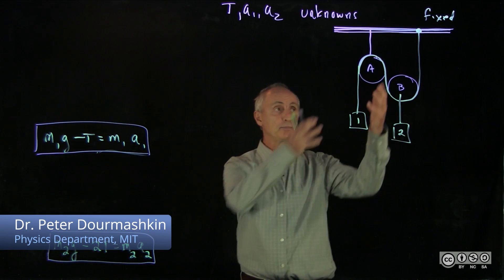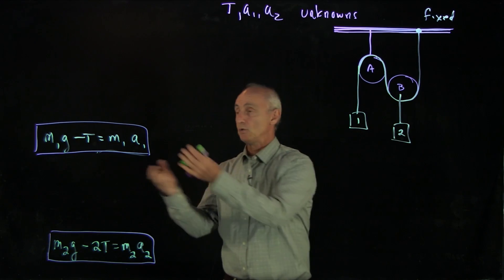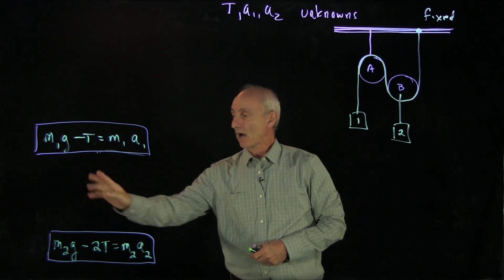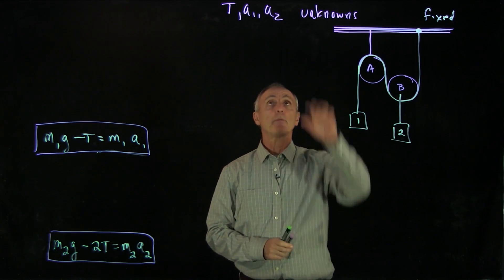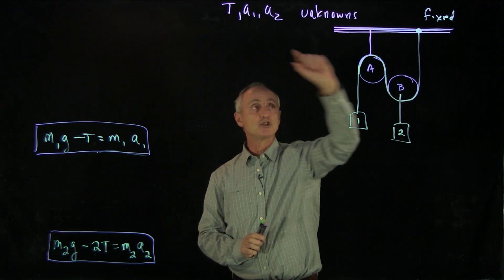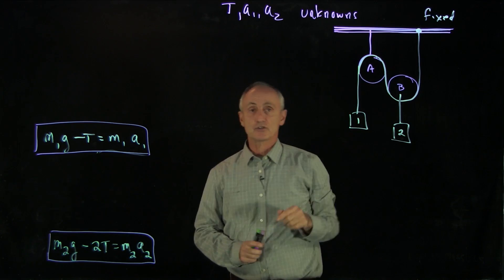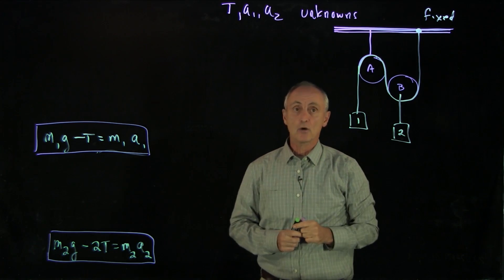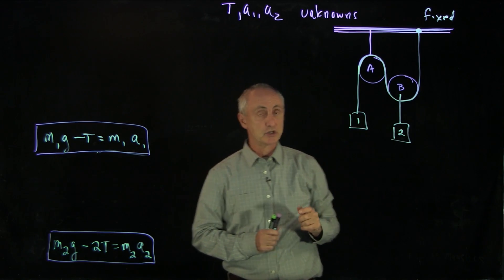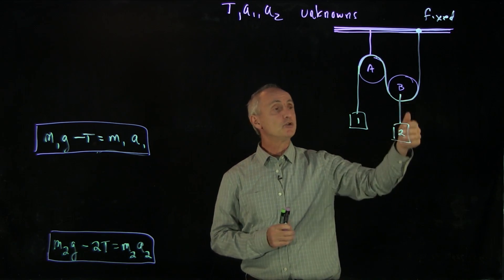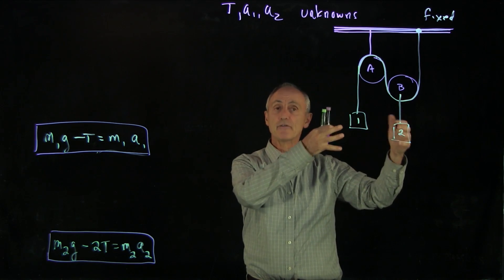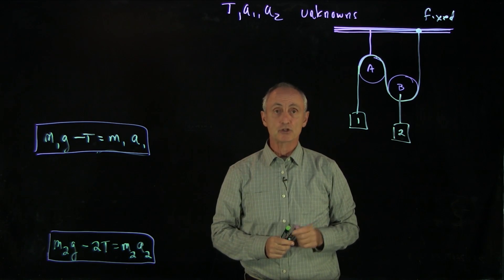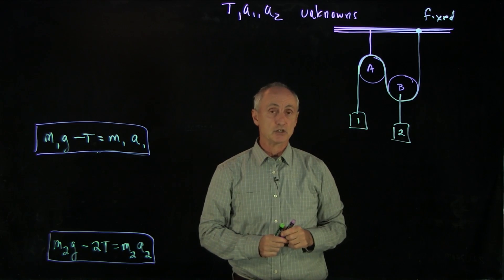When we analyzed Newton's second law applied to this compound system, we had two equations for M1, object 1, and object 2. We found that we had three unknowns: the tension in the string and the accelerations of the two objects. How do we solve this system? We're missing one condition, a constraint condition, which is that as object 2 moves and object 1 moves, they have to move in some relationship together. Now what we'd like to do is show an analytic approach for finding that constraint condition.